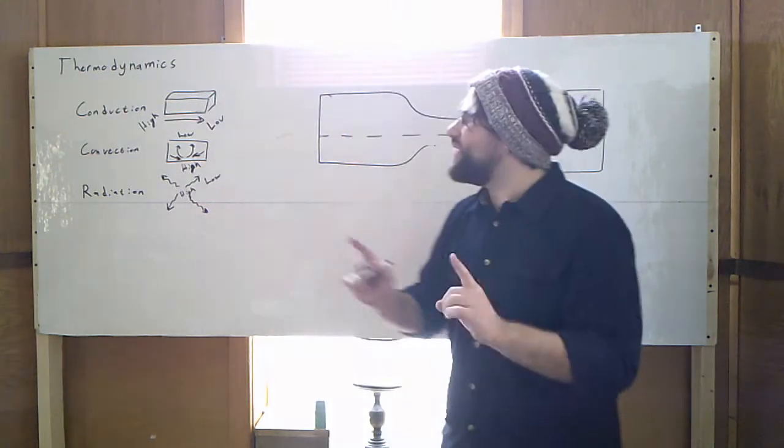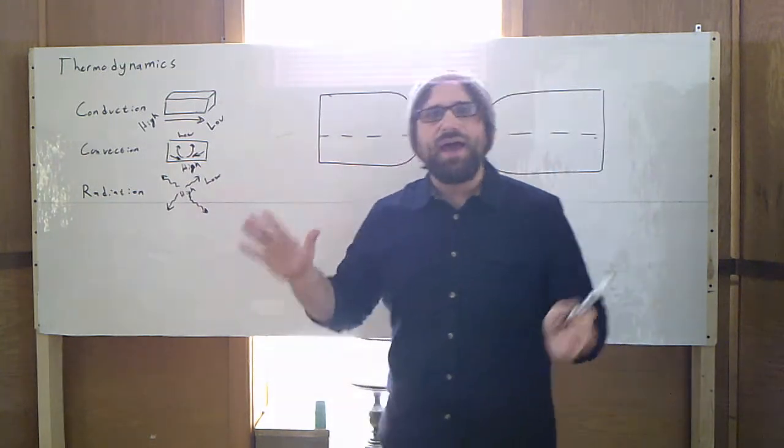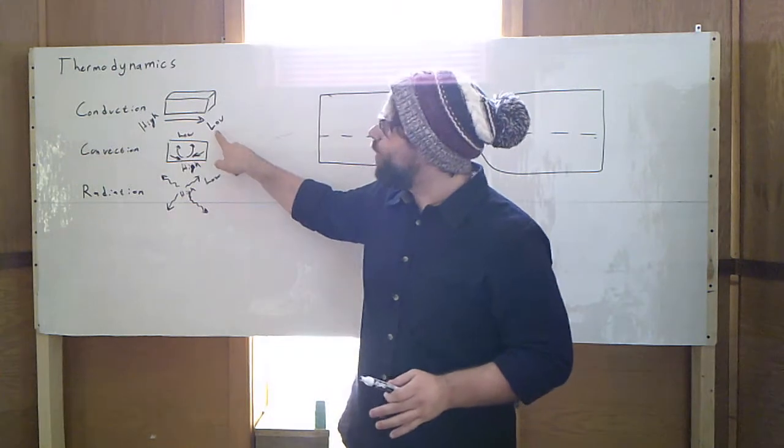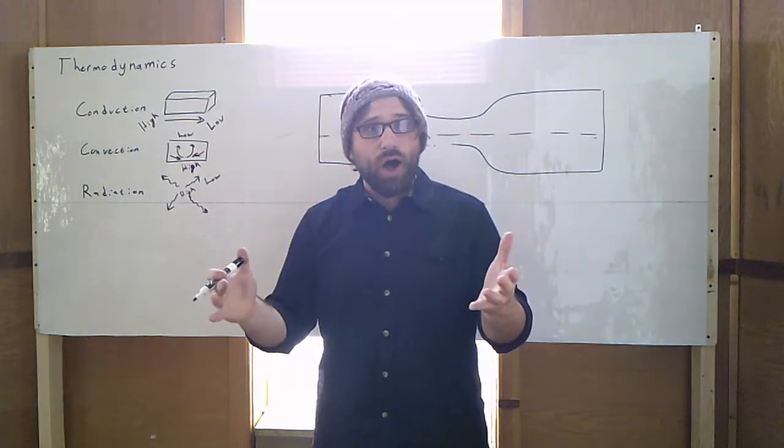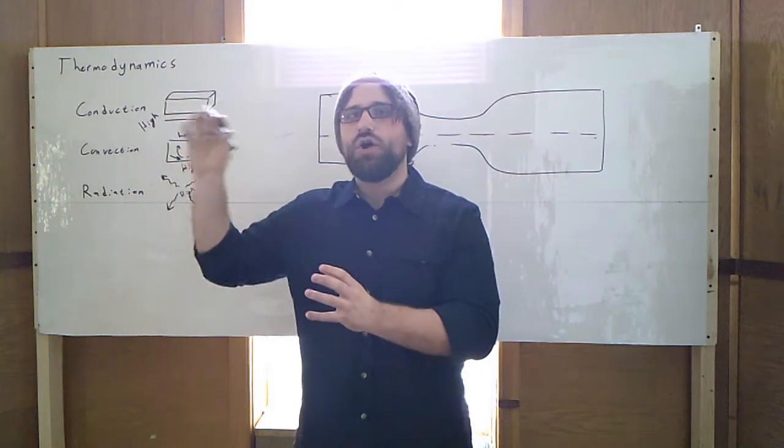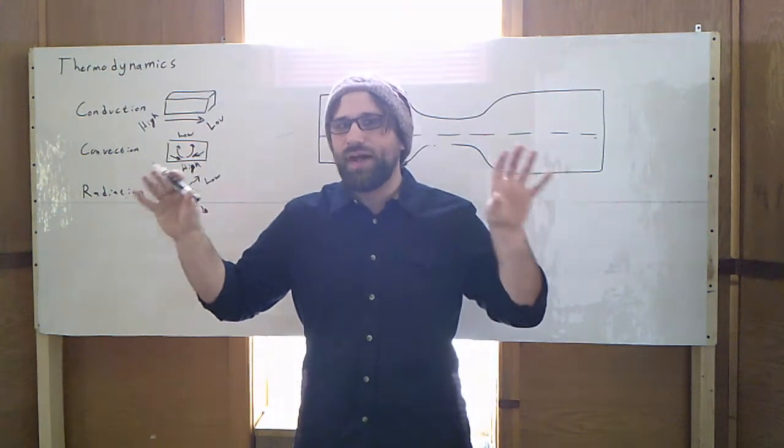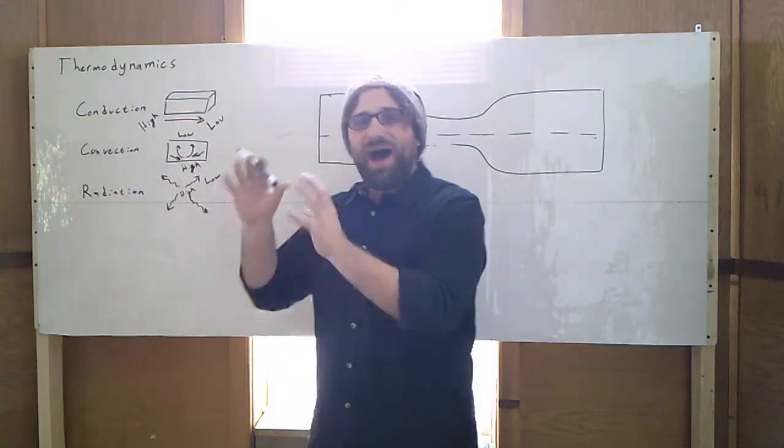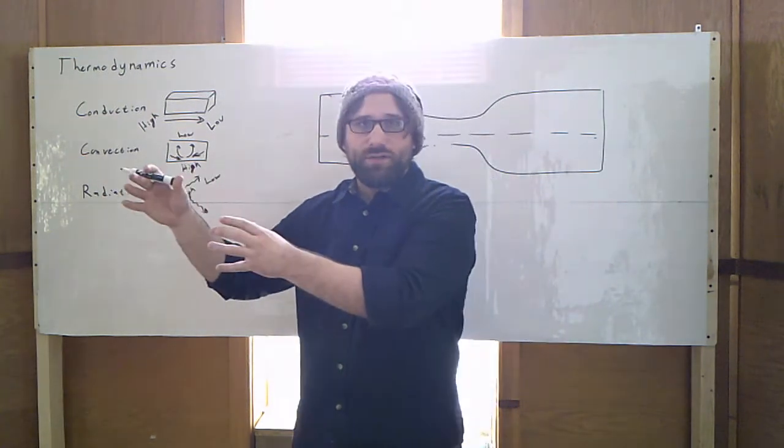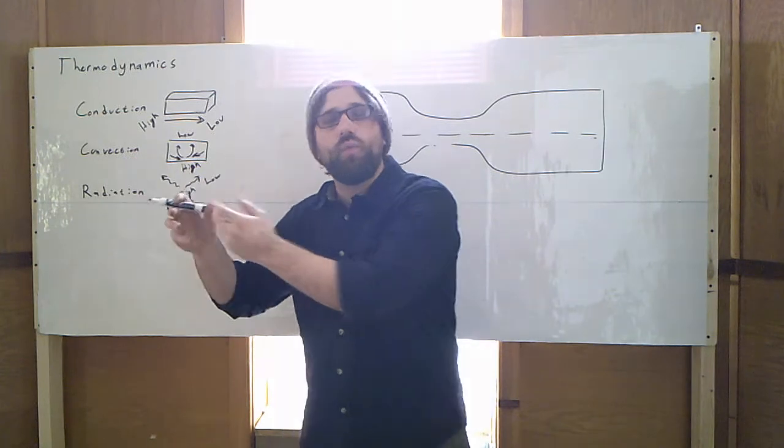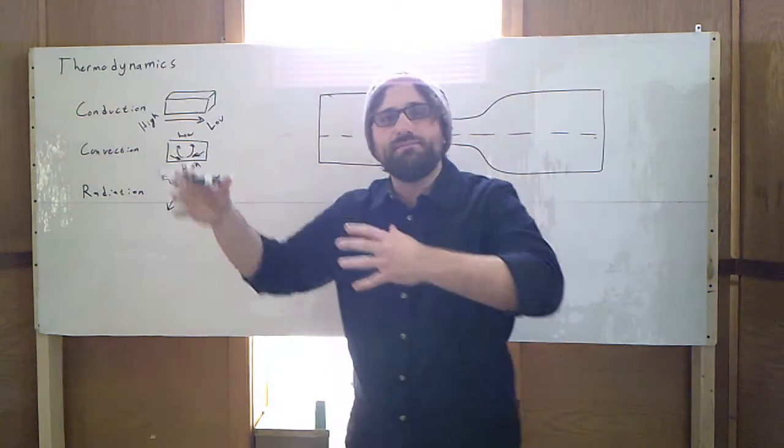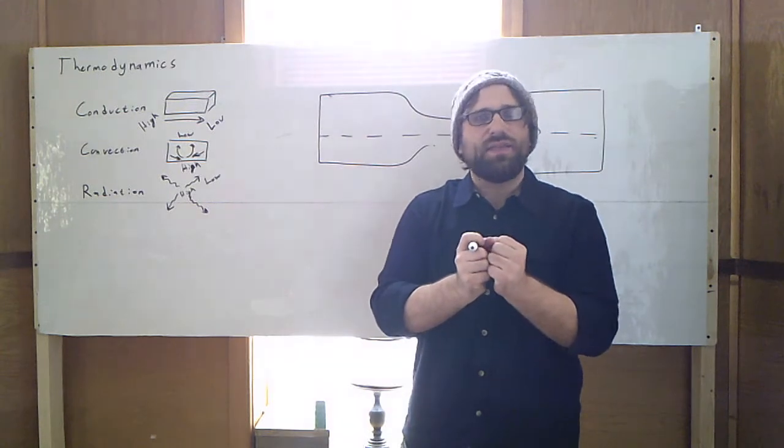Why we could have this reaction where we mix two chemicals and they get colder instead of warmer. Because just right now, we can't say energy always flows from a place of high energy to a place of low energy. Because we saw in that chemical reaction between ammonium chloride and barium hydroxide, the higher energy spot was the starting point. Energy didn't flow away from it. Energy flowed into it. We ended up getting more energy than we started with.